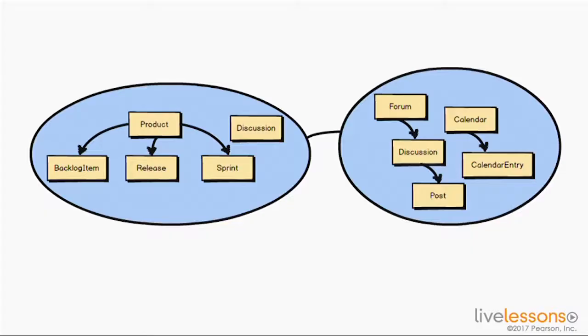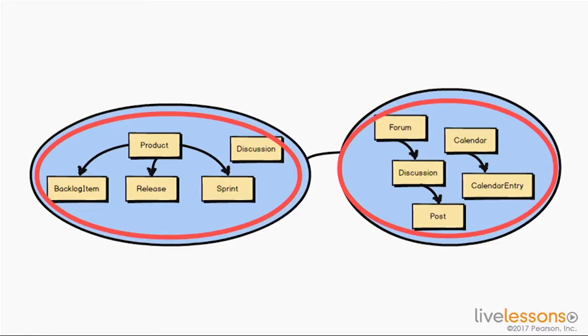So far, we've been discussing strategic design with bounded contexts, subdomains, and context mapping. Here you see two bounded contexts: the core domain, the agile project management context, and a supporting subdomain, the collaboration context. But what about the objects that live inside — the concepts that make up the actual domain model? That's what we're going to be looking at next. These are likely the aggregates that live in your model.